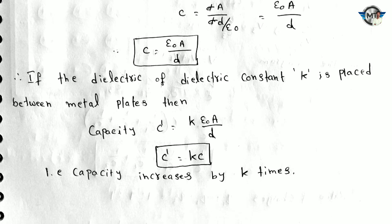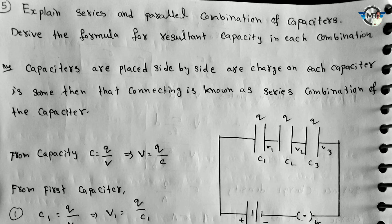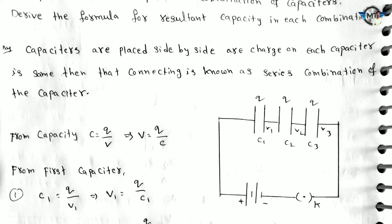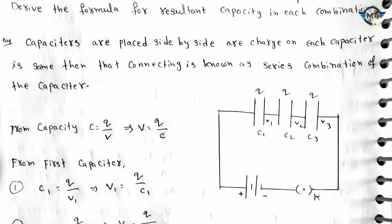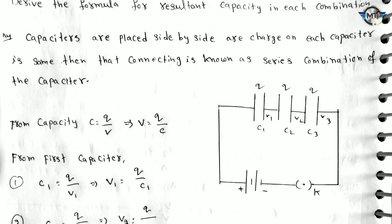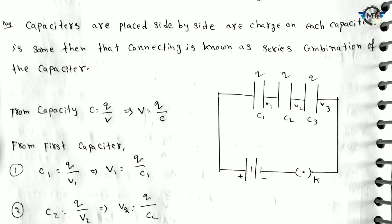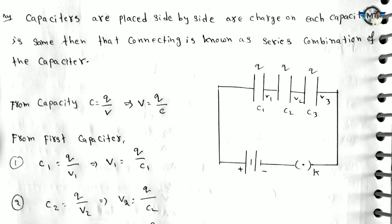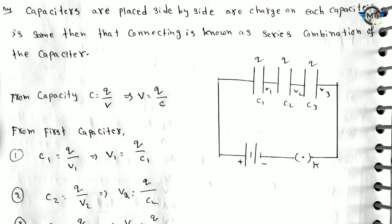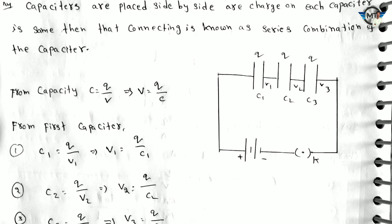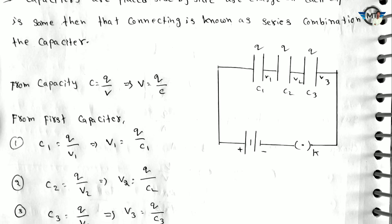Next question — this is very important. The question is: parallel combination and series combination of capacitors. In series combination, capacitors are placed side by side and the charge on each capacitor is the same. That connection is known as series combination of capacitors.